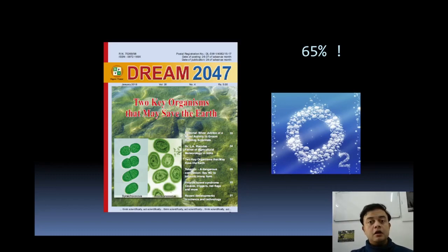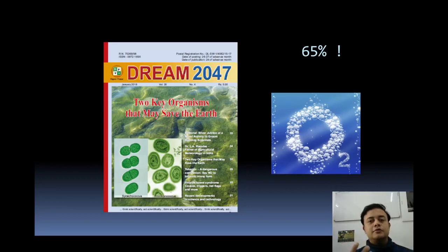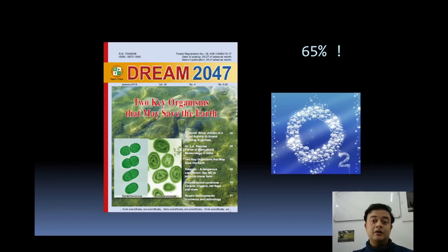Cyanobacteria alone produce 65% of the oxygen in the air that we breathe. Let's take three deep breaths — as in a yoga or meditation instruction. Out of those three breaths, two come directly from these two algae alone: Prochlorococcus and Synechococcus. Two breaths out of every three come from the oceans, and these two genera are responsible for the majority of carbon fixation on planet Earth.